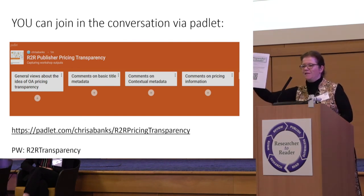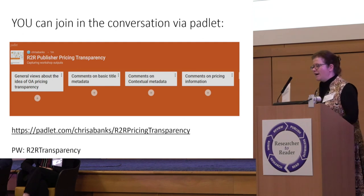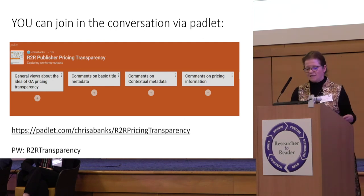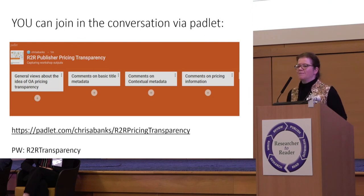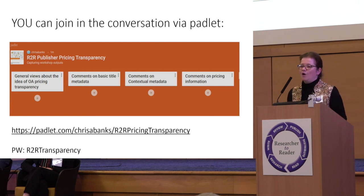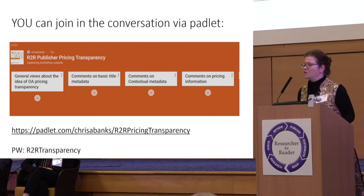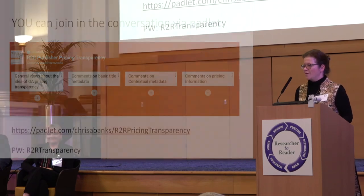Conclusions: it's difficult but worthwhile. We need to open up the black box of publishing to make it more transparent and tangible — but at the same time we also want the funder side to be as transparent as publishers are expected to be. Implement possibly in stages — straightforward parts first, less straightforward parts later. You can join the conversation on your tables via a Padlet — the password is r2r transparency. Thank you to Alicia and Information Power for all the work they did in facilitating this.